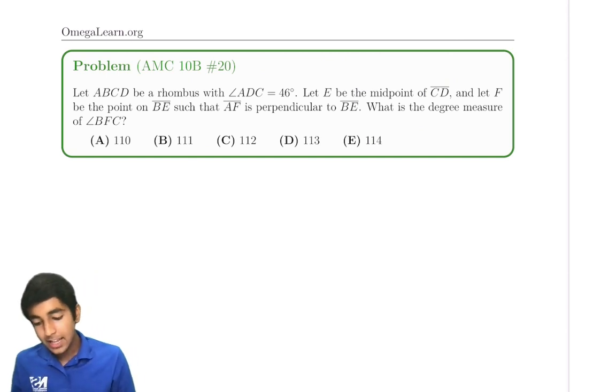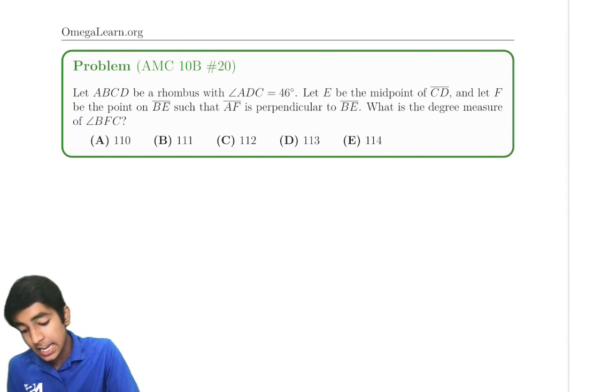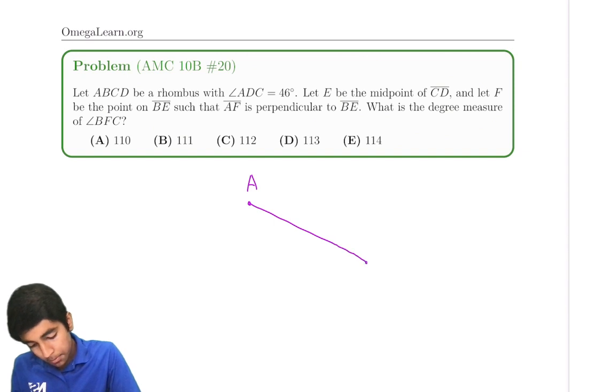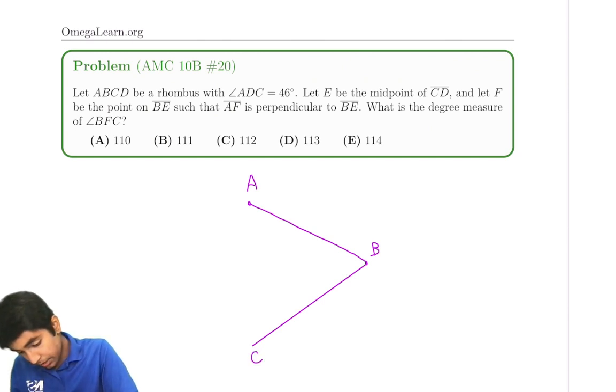Let ABCD be a rhombus such that angle ADC is 46 degrees. Got a rhombus - A, B, C - and then we've got a point D here. So that is D over there. And then AD...